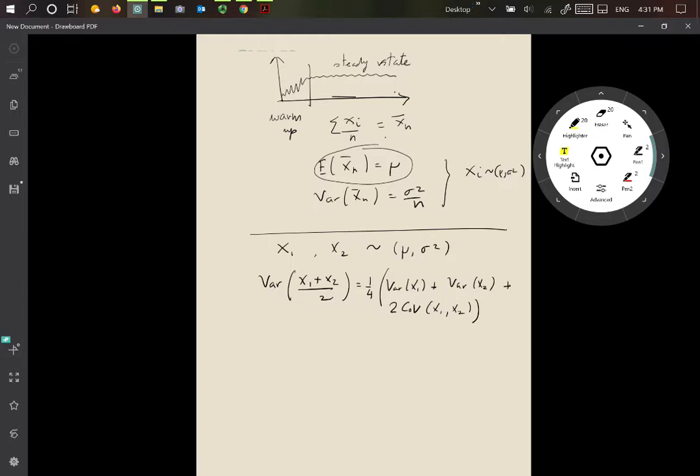Okay, and so if we can somehow find something which has a negative covariance, then we can reduce the overall variance, because we're going to subtract the two twice the covariance from the two variances over here.